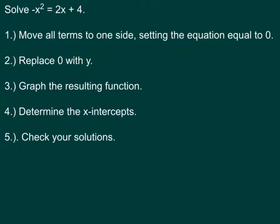Last example here. Solve negative x squared equals 2x plus 4. You can do it whichever way you want here. I'm going to add x squared to each side. So I'm going to have 0 equals x squared plus 2x plus 4. Y equals x squared plus 2x plus 4. So it should be opening up. We find the vertex, and we graph it using a t-chart.